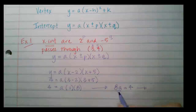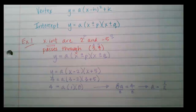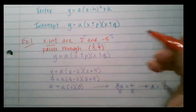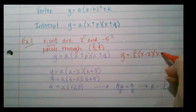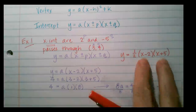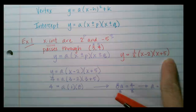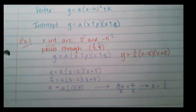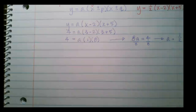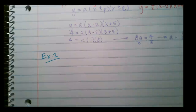Dividing both sides by 8, a equals one half. So the equation for this parabola is y equals ½(x minus 2)(x plus 5). This parabola has x-intercepts at 2 and negative 5, and if I fill in 3 for x it equals 4.